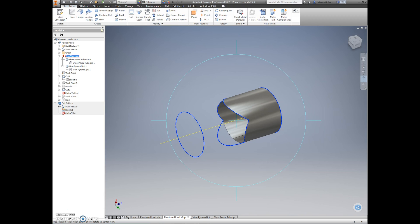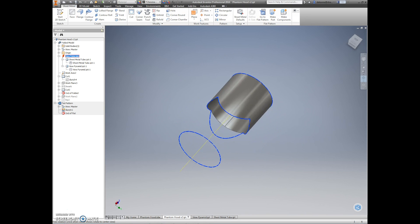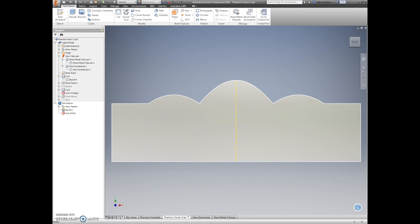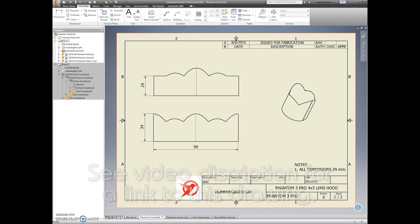Next we minus the view cone from the tube to create our lens hood shape. We unroll the tube and create a drawing. This drawing can be downloaded from the link in the description of this video.